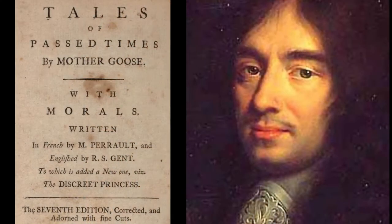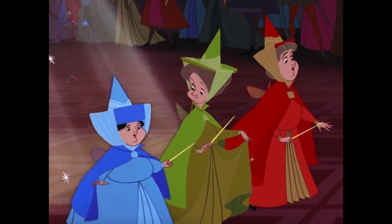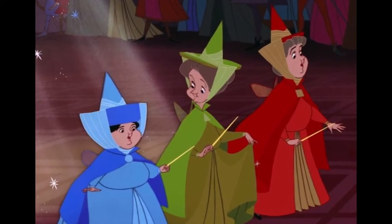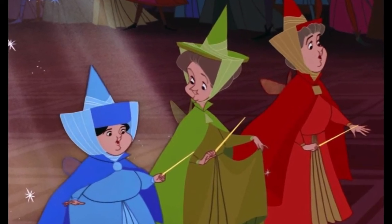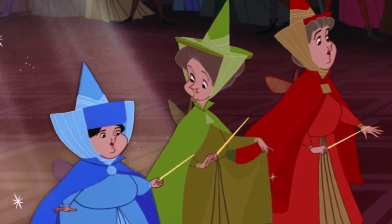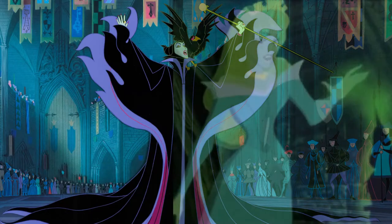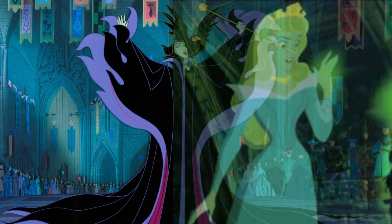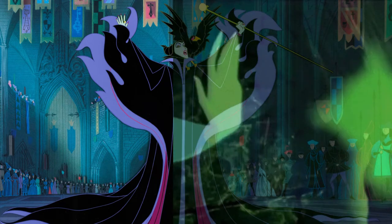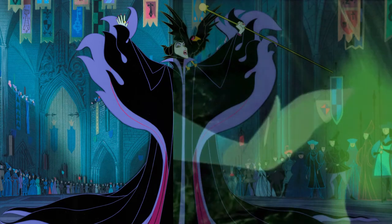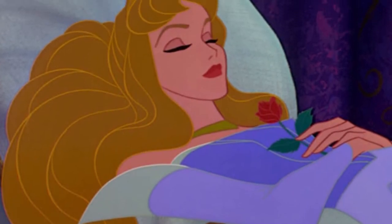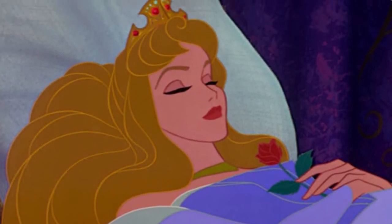The Disney film version is based on the Charles Perrault version from 1697. In this version, the three good fairies give the princess gifts of beauty, grace, good temper, dancing and music. The princess is cursed to death on pricking her finger on a spinning wheel, but the third good fairy revises this curse into a 100-year sleep.